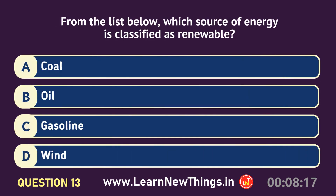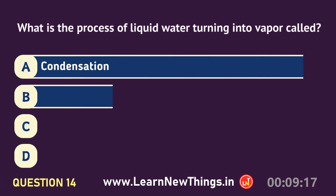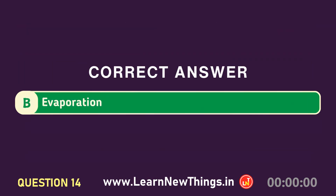From the list below, which source of energy is classified as renewable? Wind. What is the process of liquid water turning into vapor called? Evaporation.